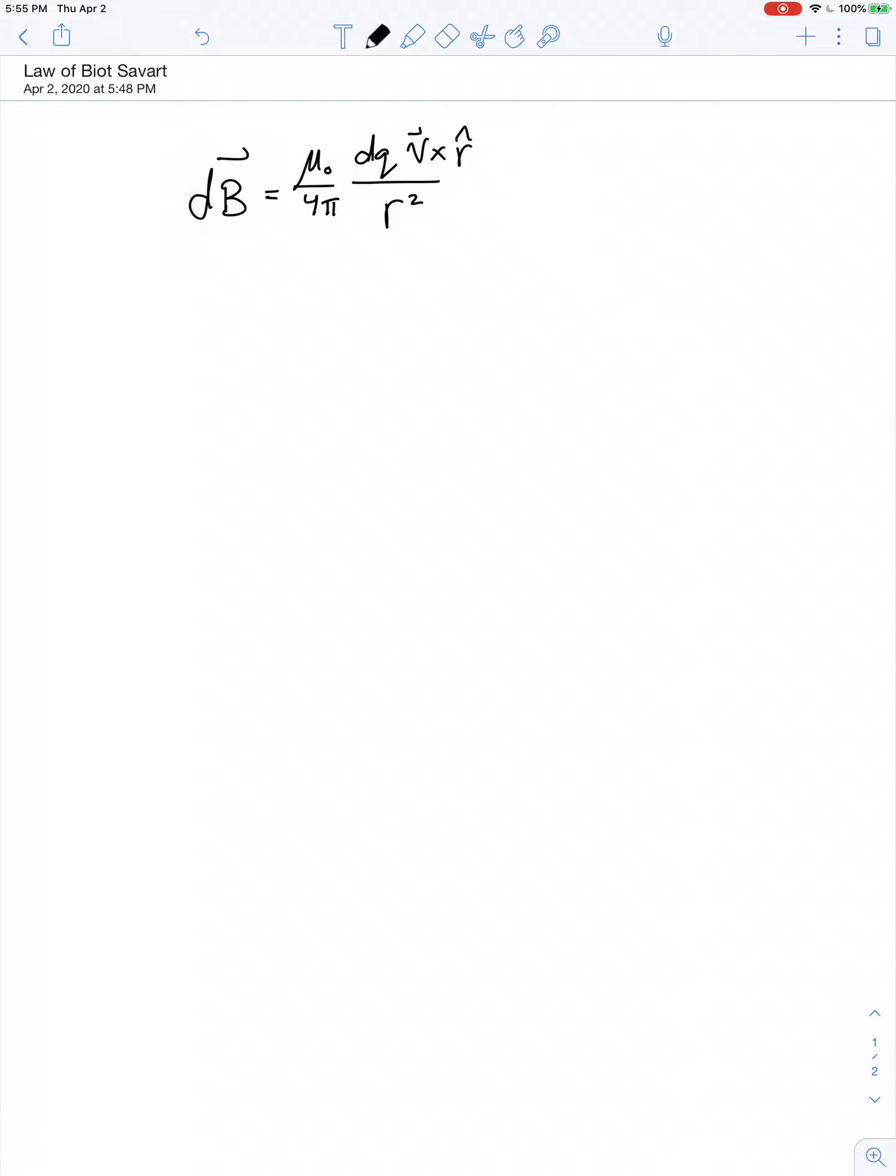We can illustrate this by saying dq is this little bit of charge, and maybe the velocity vector points to the right. And so this quantity r might represent the distance to whatever point in question. If I want to know how much little bit of magnetic field comes from this charge in motion at this location, then I need to know how far away that point is from the moving charge. So there's the value of r. r hat is nothing more than a vector one unit long.